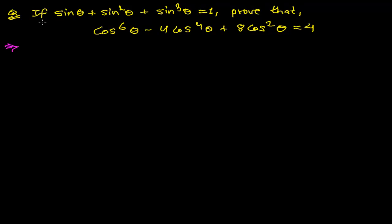The question says: if sin θ + sin²θ + sin³θ = 1, prove that cos⁶θ - 4cos⁴θ + 8cos²θ = 4. We are given everything in sine form and we need to convert all of it into cosine form.